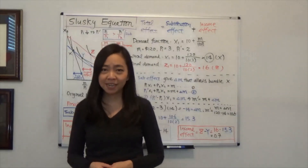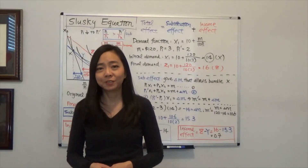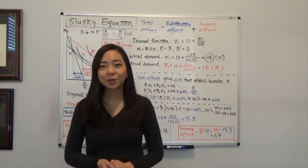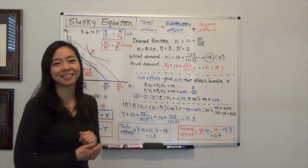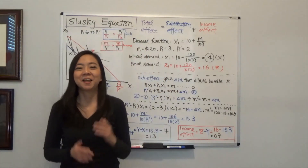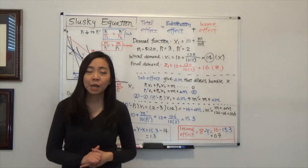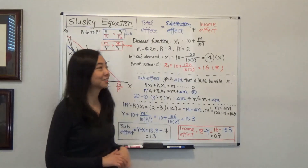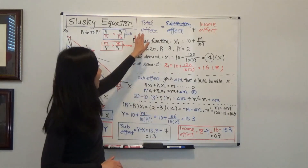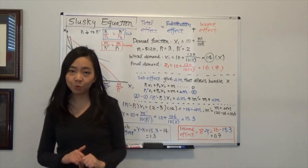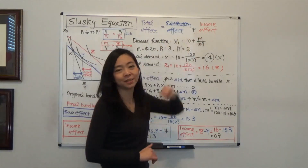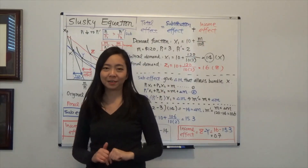Hello everyone. My name is Iris Franz. I'm Janine Wynru. Today we're going to talk about the Slotsky equation. The bottom line of the Slotsky equation is this: total effect is equal to substitution effect plus income effect.